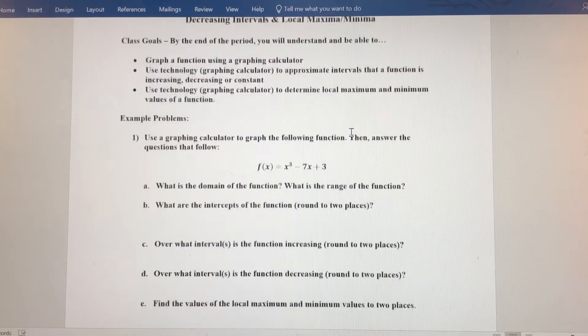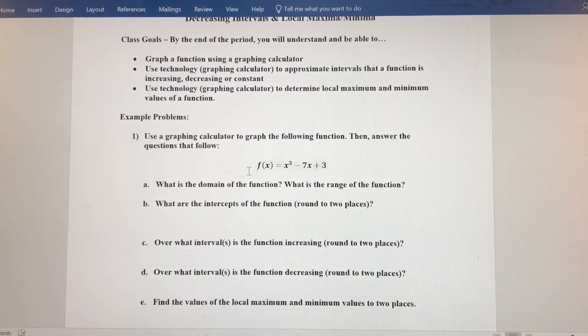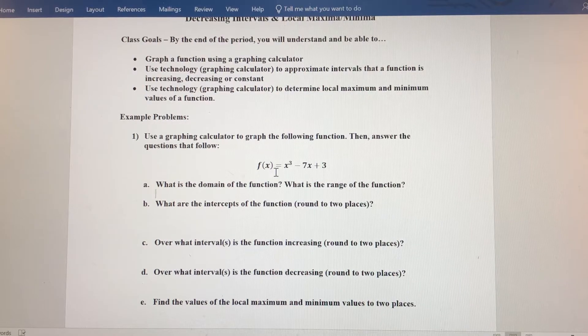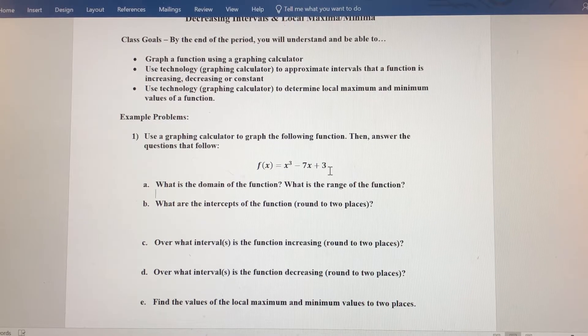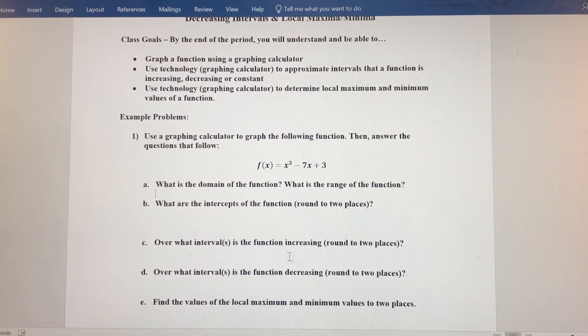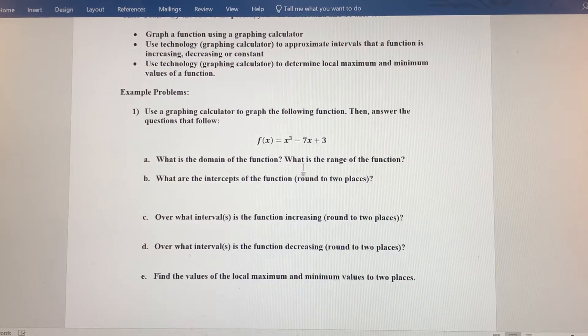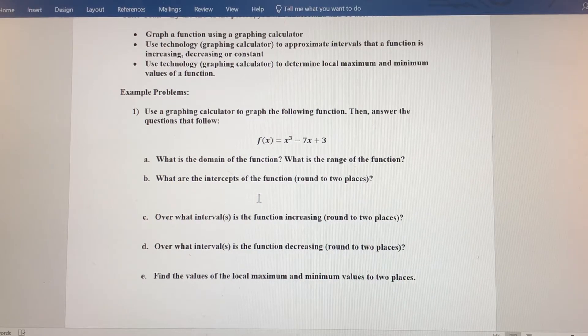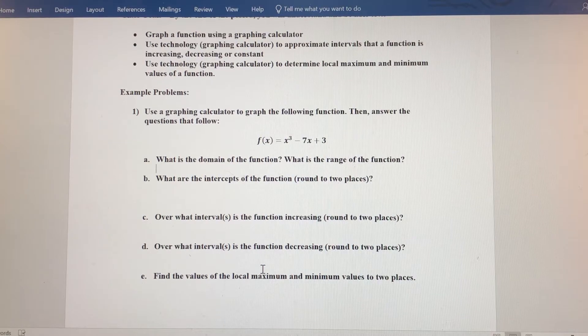We're going to use that graphing calculator. We're going to graph this function. It's a cubic function, f of x equals x cubed minus 7x plus 3. And we can use that to determine all of the stuff that we've been finding recently, the domain and range of the function, the intercepts of the function, the increasing and decreasing intervals, and then the local max and min values.